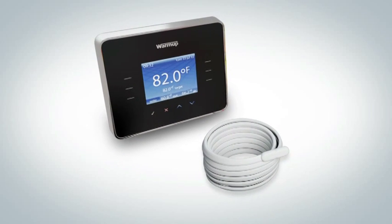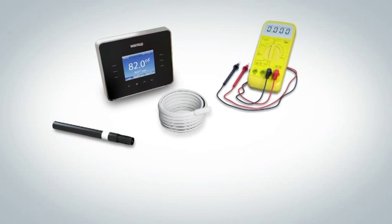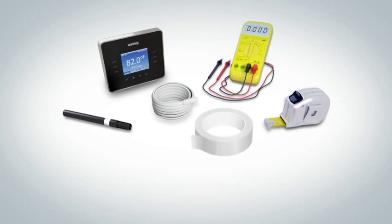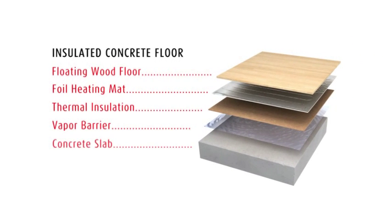Before beginning the installation, make sure you have a Warm-up thermostat with floor sensor, a digital multimeter, a marker, measuring tape, aluminum foil tape to secure the mats to the floor, scissors for cutting the foil matting where necessary, and a hammer and chisel. Make sure that your underlayment pad is best suited to your application.